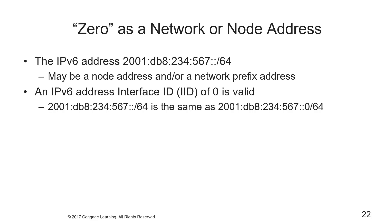The IPv6 address 2001:DB8:234:567::/64 may be a node address or a network prefix address. A v6 interface ID (IID) of 0 is valid, so 2001:DB8:234:567::/64 could be written as 2001:DB8:234:567::0/64. You may consider not using 0 as an IID when addressing v6 nodes or interfaces as it could be confusing, if only in your system documentation.